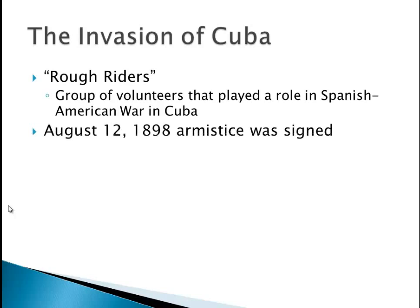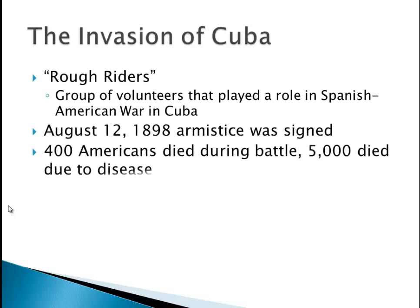August 12th, 1898 — an armistice, an agreement to stop fighting, is signed. 400 Americans died during battle — a very small amount died from actual battle wounds. However, 5,000 died due to disease. There have been AP questions that ask what most Americans were killed by during this war, and the answer is disease. It's similar to the Mexican-American War — most Americans didn't end up dying from battle, they ended up dying from disease.